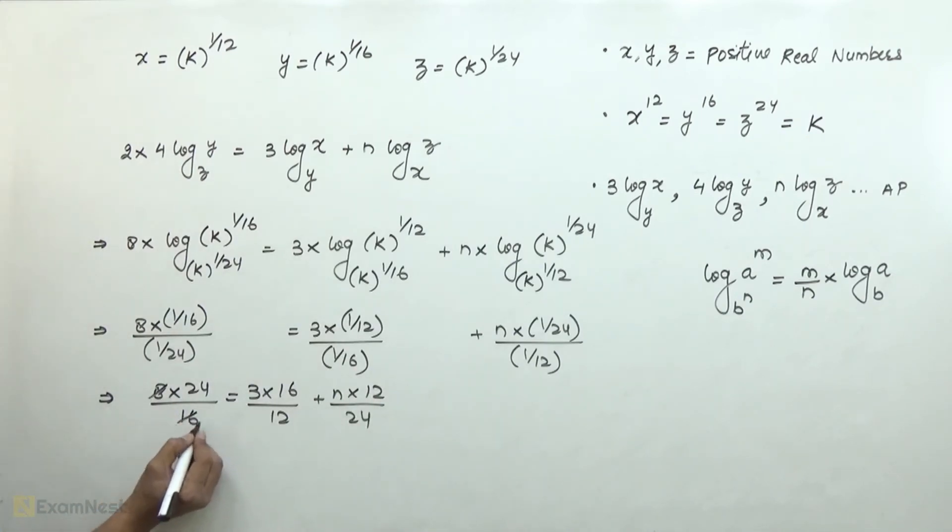equals 3 into 16 over 12 plus n into 12 over 24. Simplifying, 8 goes into 16 twice, 2 goes into 24 twelve times, so we get 12 equals 4 plus n over 2.